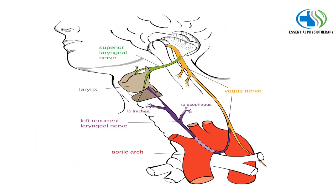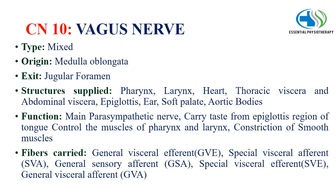The 10th cranial nerve is the vagus nerve. It is a mixed type nerve with its origin from the medulla oblongata, exiting through the jugular foramen. Structures supplied include the pharynx, larynx, heart, thoracic viscera, abdominal viscera, epiglottis, ear, soft palate and aortic bodies. Its function is to serve as the main parasympathetic nerve, carry taste from the epiglottis region of the tongue, control muscles of the pharynx and larynx, and constriction of smooth muscles. Fibers carried include general visceral efferent, special visceral efferent, general somatic afferent and general visceral afferent fibers.